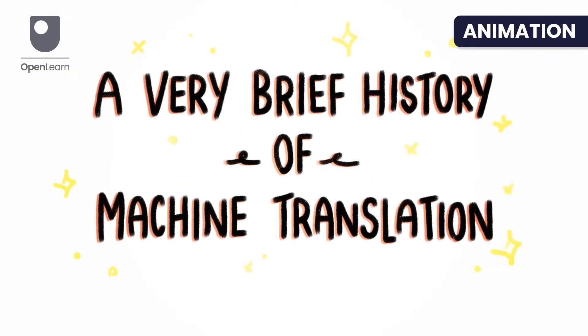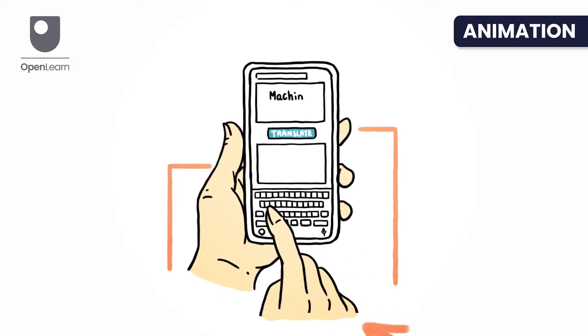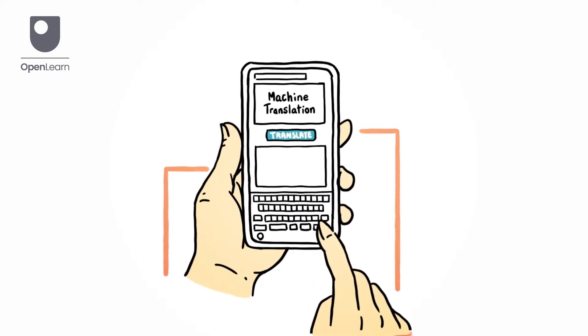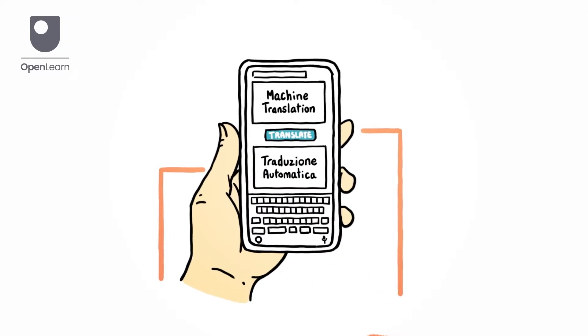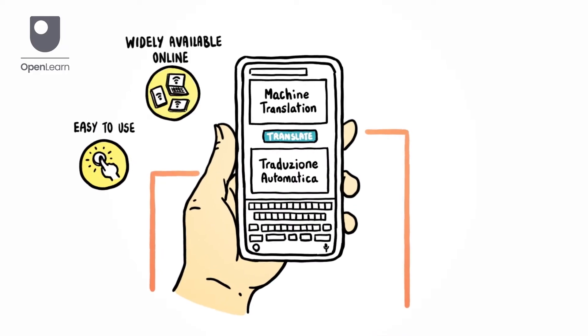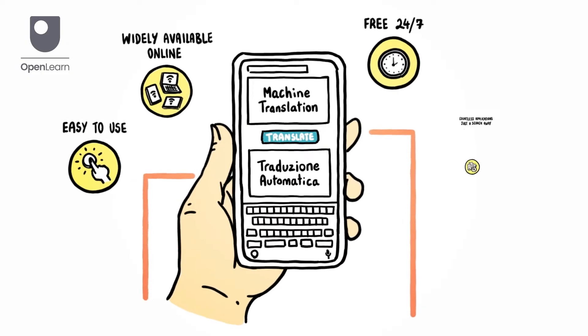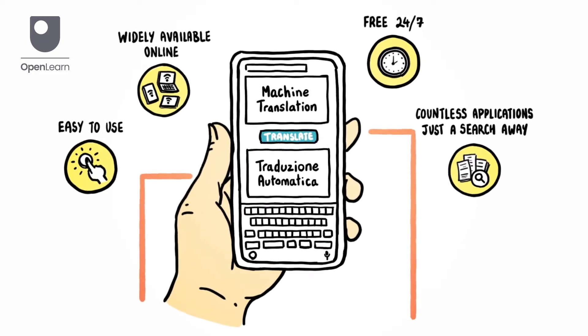A very brief history of machine translation. Machine translation is an automated process to translate text or speech from one language to another. It is very easy to use, widely available online and free 24-7 with countless applications just a search away.